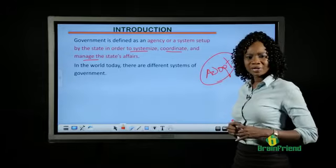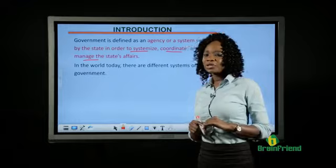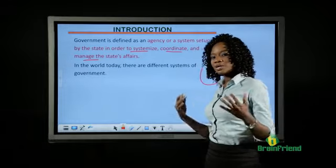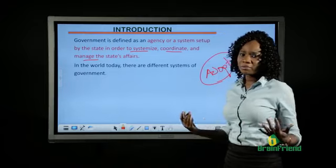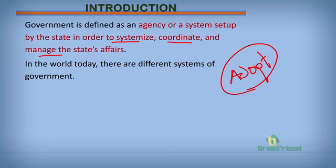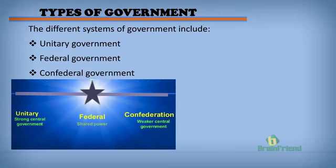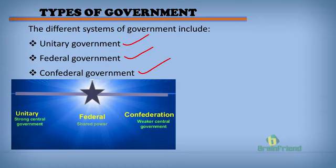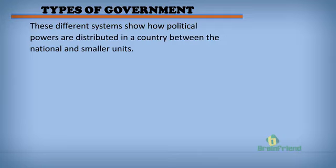In the world today, people practice different systems of government: the presidential system, the federal system, the monarchical system, and their likes. All of these are forms of government practiced in different countries. There are some main types that countries practice today, and these include the unitary government, the federal government, and the confederal government. In today's lesson, we'll be looking at the confederal government.